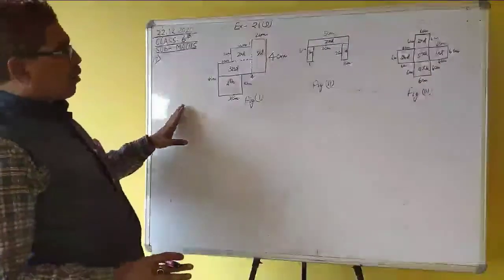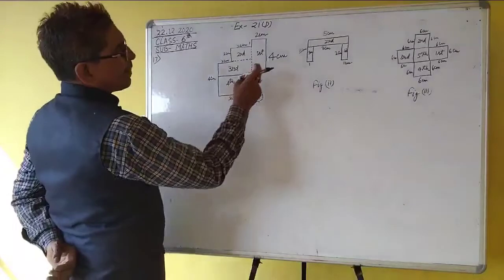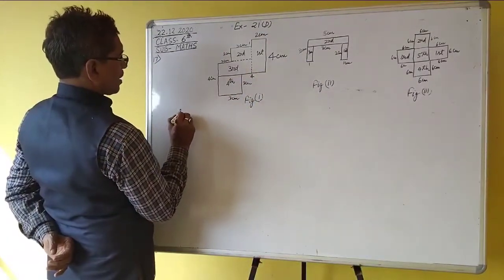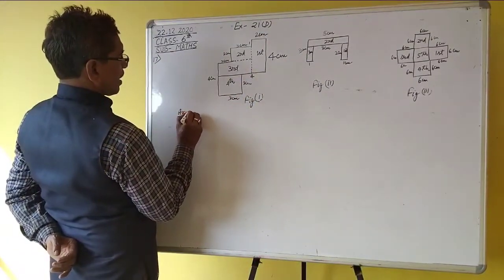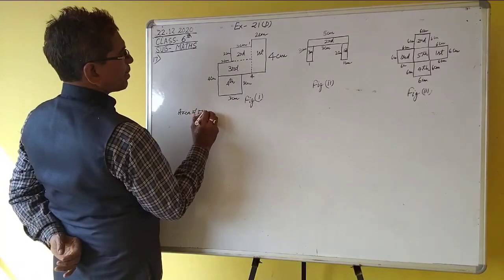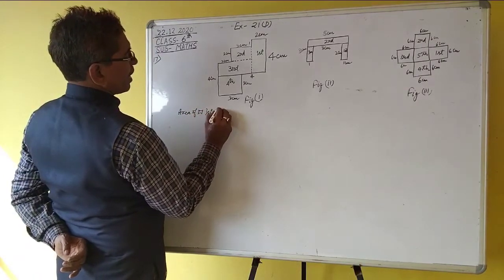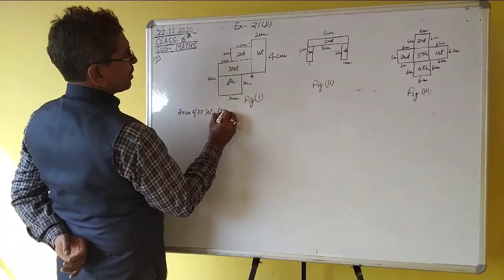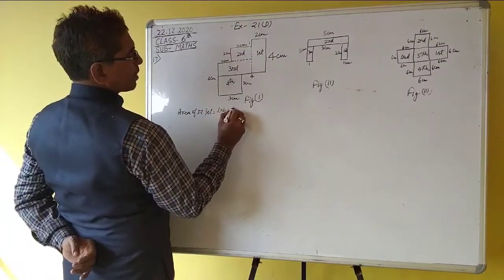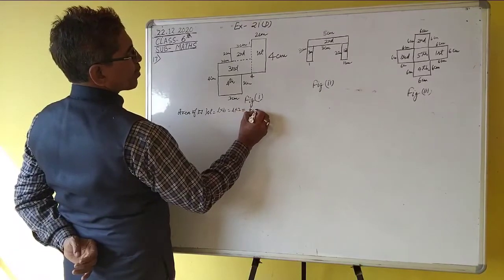First we solve question figure number one. The area of the first rectangle: l into b is equal to 4 into 2, which is equal to 8 cm square.